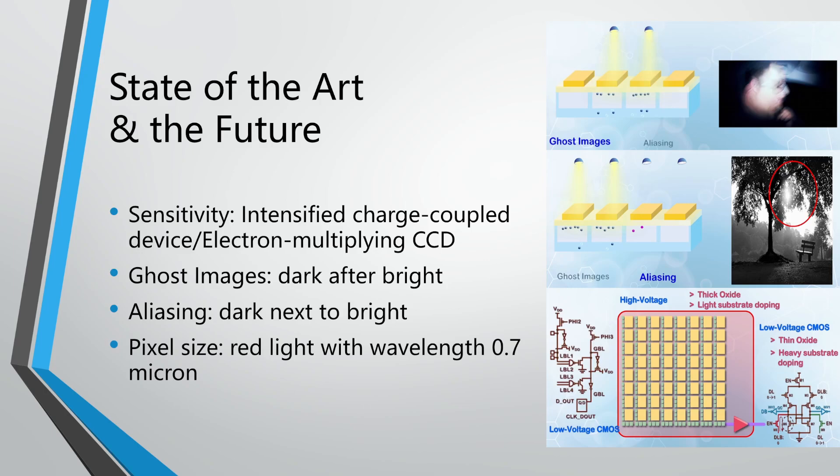Another challenge is the shrinking of the CCD imaging sensor. We know that white light has a wavelength of about 0.7 microns, and anything smaller than the wavelength cannot capture the light. One idea is to borrow from photolithography — immersing lenses in water to make the effective light wavelength shorter, which may reduce pixel size. Additionally, borrowing ideas from bipolar CMOS technology, we might be able to combine low-voltage CMOS circuits with CCD on the same chip to reduce cost.